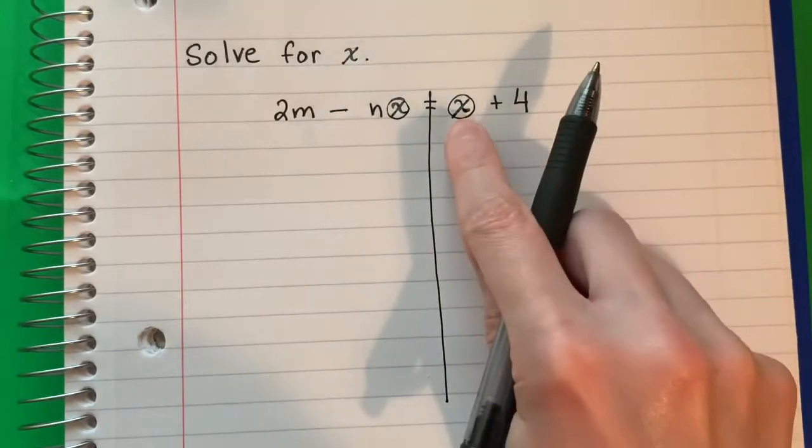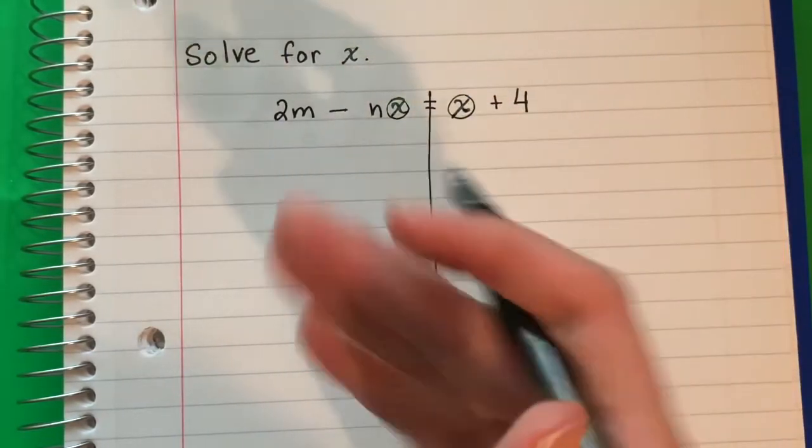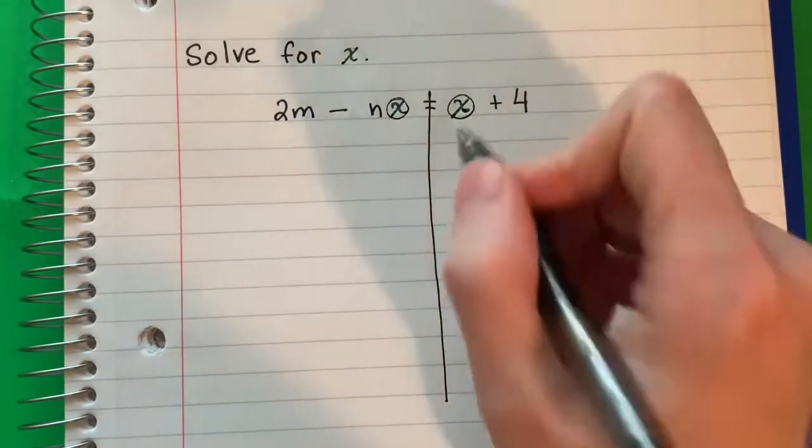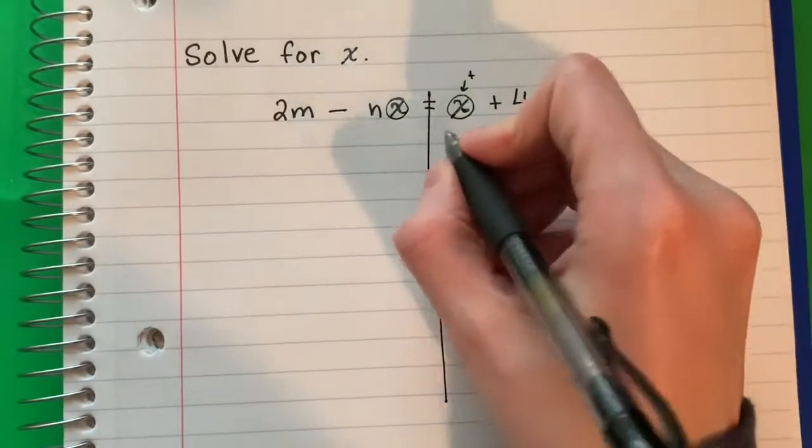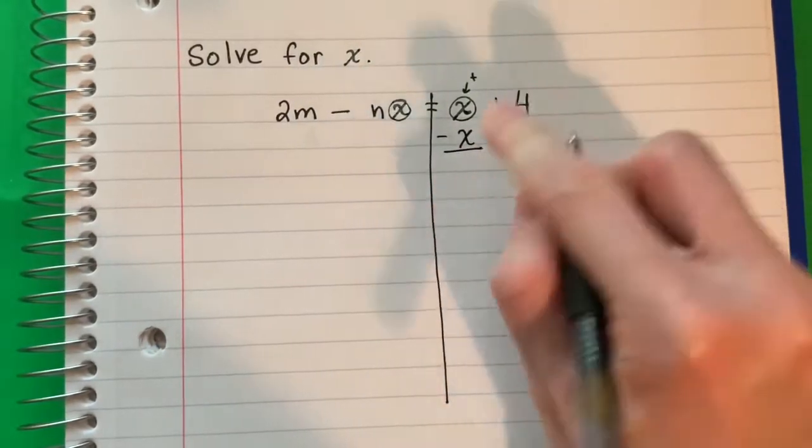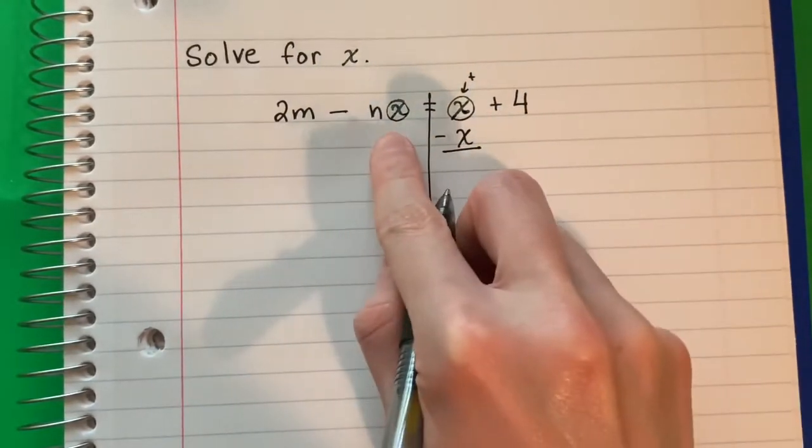This is positive x. The opposite of positive is negative so I'm going to do minus x and I'm going to put the x's with the x's. So minus x.